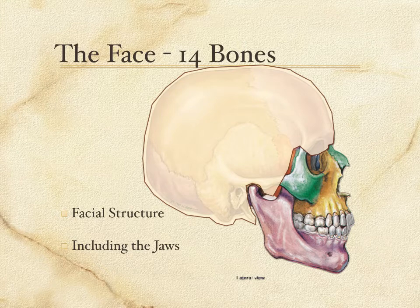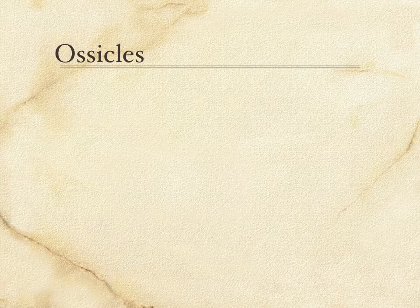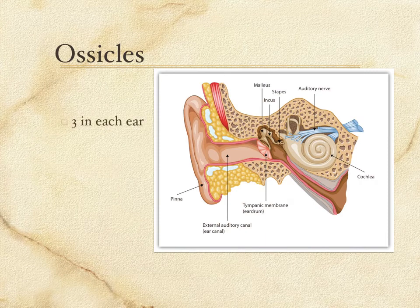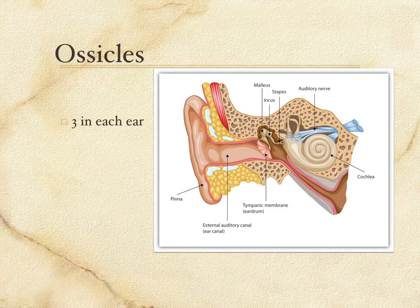So eight bones in the cranium, 14 bones in the face. There are six other bones called the ossicles — the tiniest bones in the human body. They are located in the ear, three in each ear. If you look right in the center of this diagram, you see three little bones suspended in the middle section of the ear. Those three little bones transmit vibrations from the eardrum into the actual neural apparatus of the ear.